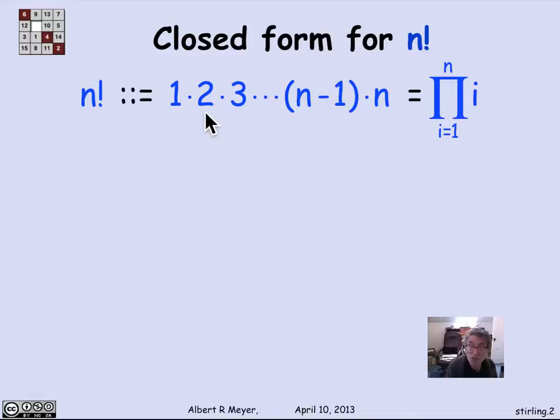So n factorial is the product of the first n integers, 1 times 2 up through n minus 1 times n. In concise product notation, it's the product, that's pi, capital pi for product, from i equals 1 to n of i. And its standard abbreviation is to write it as n bang, pronounced n factorial.